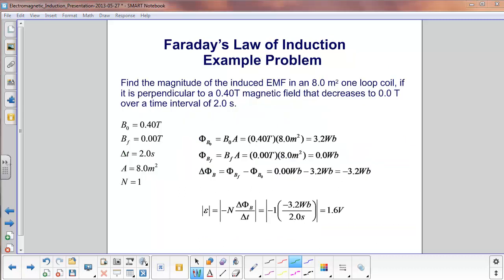Here's the example problem. Find the magnitude of the induced EMF in an eight-square-meter, one-loop coil if it is perpendicular to a 0.40 tesla magnetic field that decreases to 0 tesla over a time interval of 2.0 seconds. Best way to start any problem, list the givens.